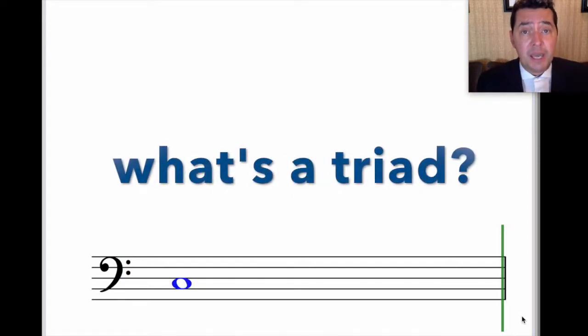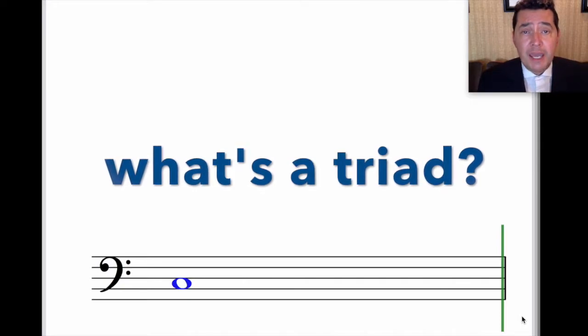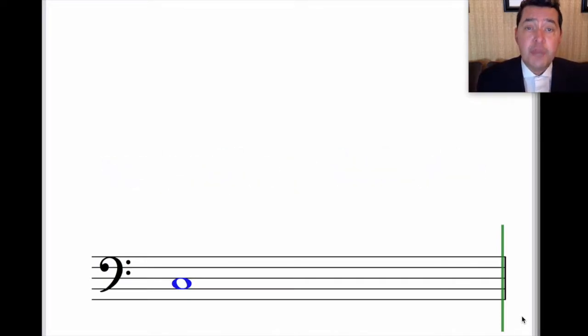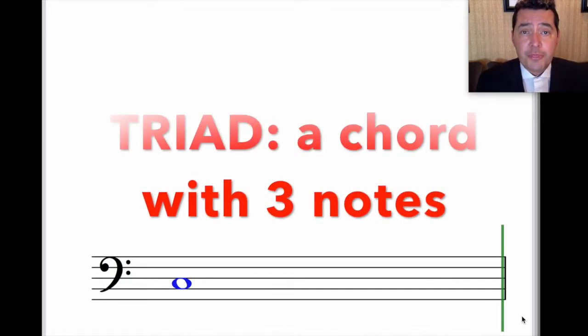But what's a triad? Well, a triad is simply a group of three interrelated things, but in a musical context, a triad refers to a chord with three notes.